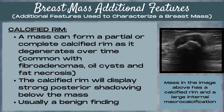Another feature that we use to characterize a breast mass is a calcified rim. This is where a mass forms a partial or a complete rim around it as it degenerates over time. We commonly see this with fibroadenomas, oil cysts, and fat necrosis. The calcified rim is going to display strong posterior shadowing below the mass, and this is most commonly a benign finding.